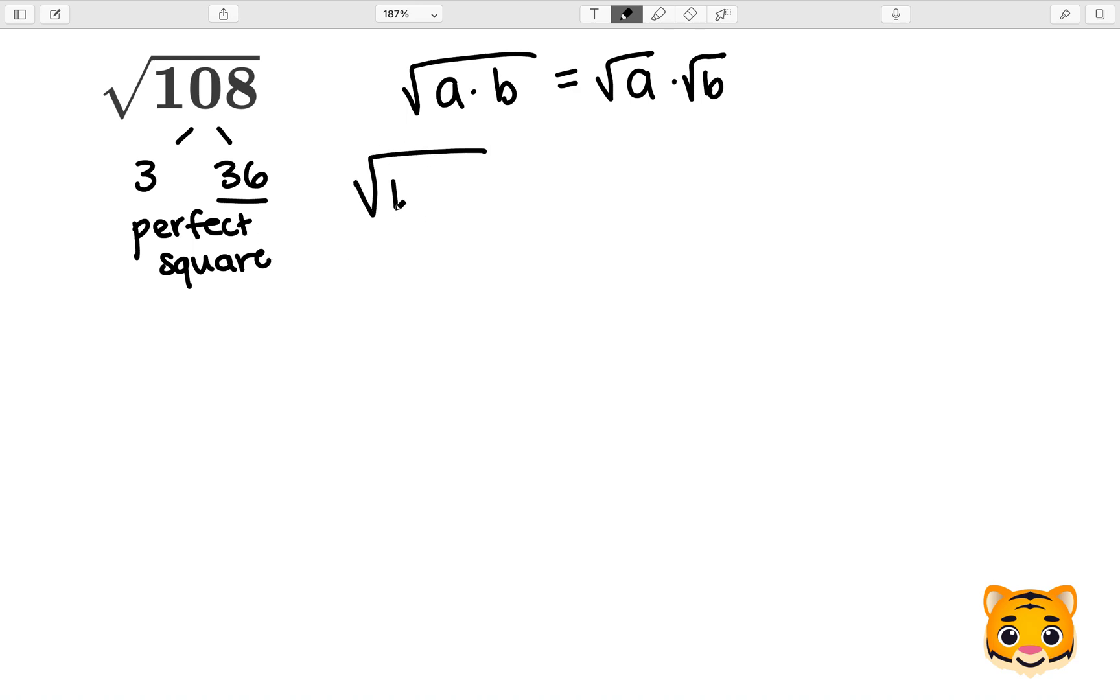Now let's rewrite the square root of 108 as the square root of 3 times 36. We can now use our math rule and split up the square root of 3 times 36 into the square root of 3 times the square root of 36.